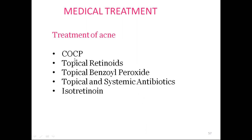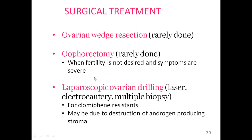Acne: mild acne is treated with combined oral contraceptive pills with low-dose pills. Moderate to severe acne requires systemic antibiotics like doxycycline, benzoyl peroxide, and topical retinoids. If all medical management fails, surgical options include laparoscopic ovarian drilling by laser or electrocautery, or multiple biopsy — used for medically resistant cases — as it destroys androgen-producing tissue in the ovary, reducing the high androgen concentration. Wedge resection is now rarely done due to loss of ovarian tissue needed for fertility. Oophorectomy is also rarely performed.